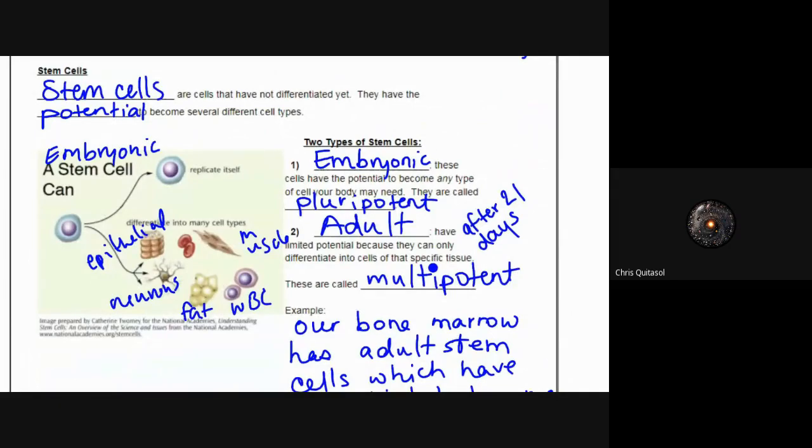An adult has stem cells as well, but they have limited potential because they can only differentiate into cells of that specific tissue. These are called multipotent cells. These multipotent cells are in our bone—they become red blood cells, white blood cells, connective tissues within the blood—but they can't become a brain cell, for example.